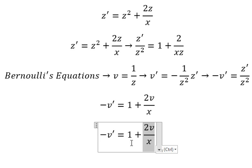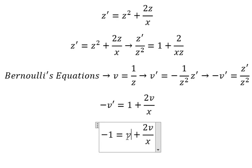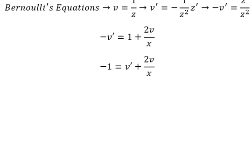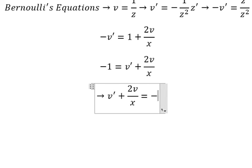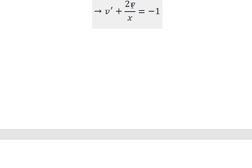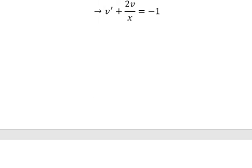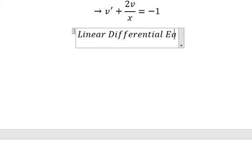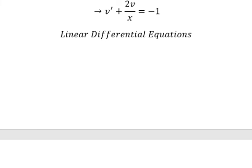Now I will rearrange this into standard linear form — moving the v term to one side and the constant to the other. So we now have an equation in v and the first derivative of v, which is a linear differential equation.